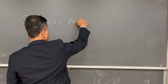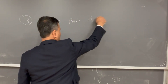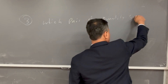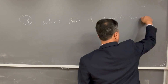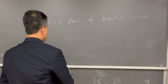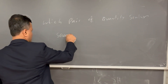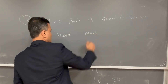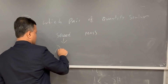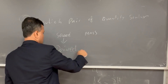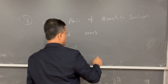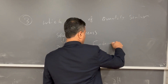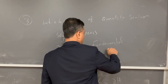Problem number three asks which pair of quantities are both scalar. Speed is scalar and mass is scalar. Speed is a derived quantity and mass is of course a fundamental quantity. However, they are both scalar.